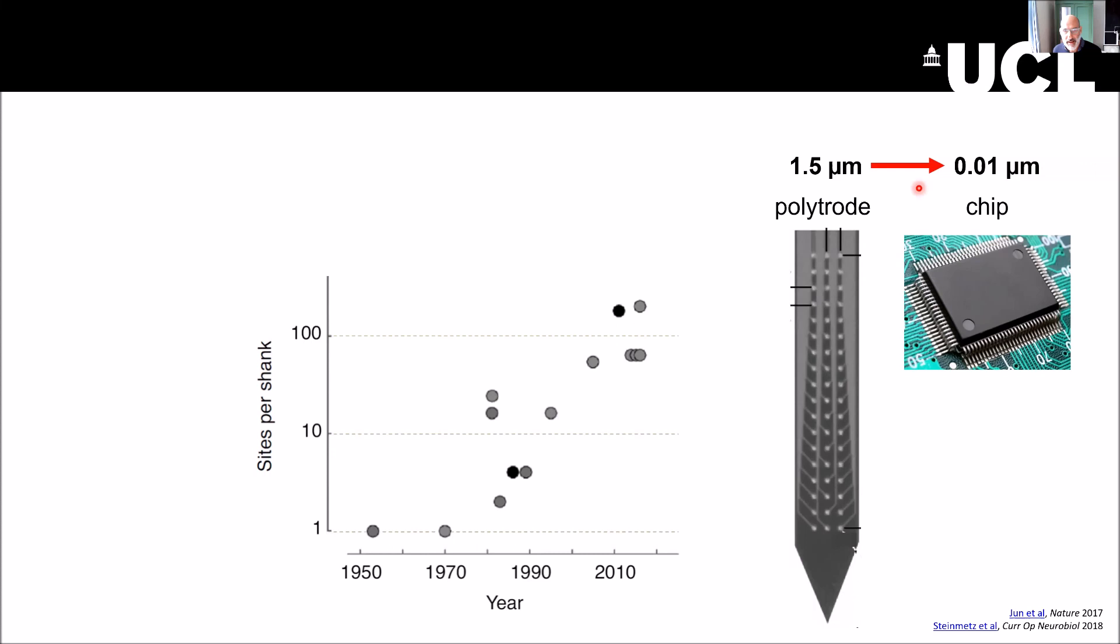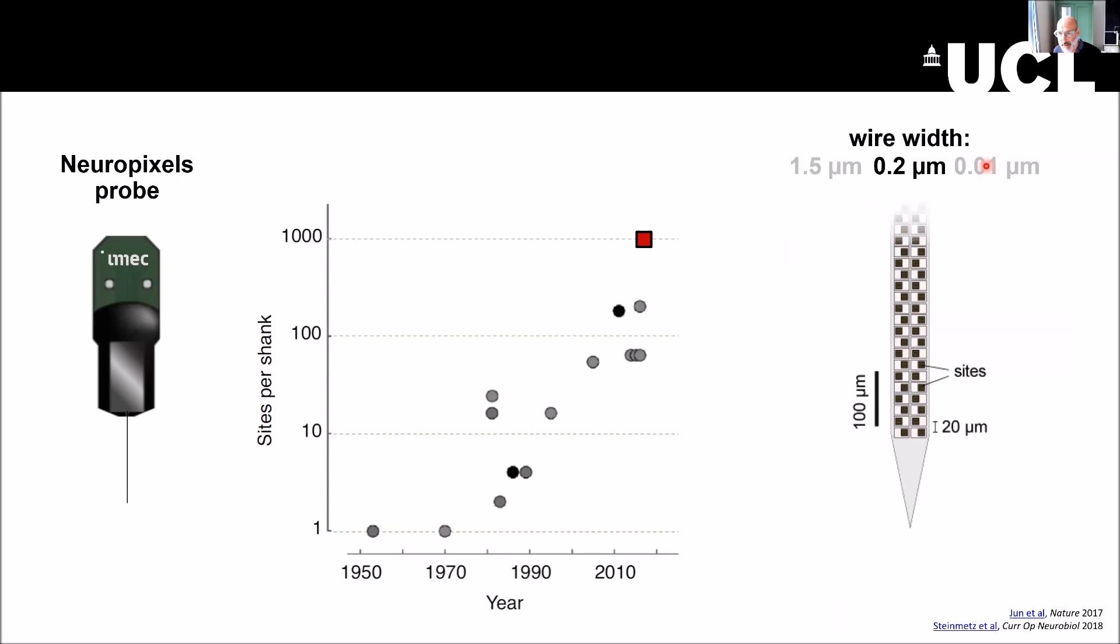At the same time, there were these chips which were around for sure at that time. And the wires in there were about 0.01 microns. So 10 nanometers. And instead, in the polytrode, the wires were 1.5 microns. So two orders of magnitude bigger. What Tim Harris and Barun and colleagues tried and understood was that it was necessary to go from this 1.5 micron towards this direction. They managed to get halfway.